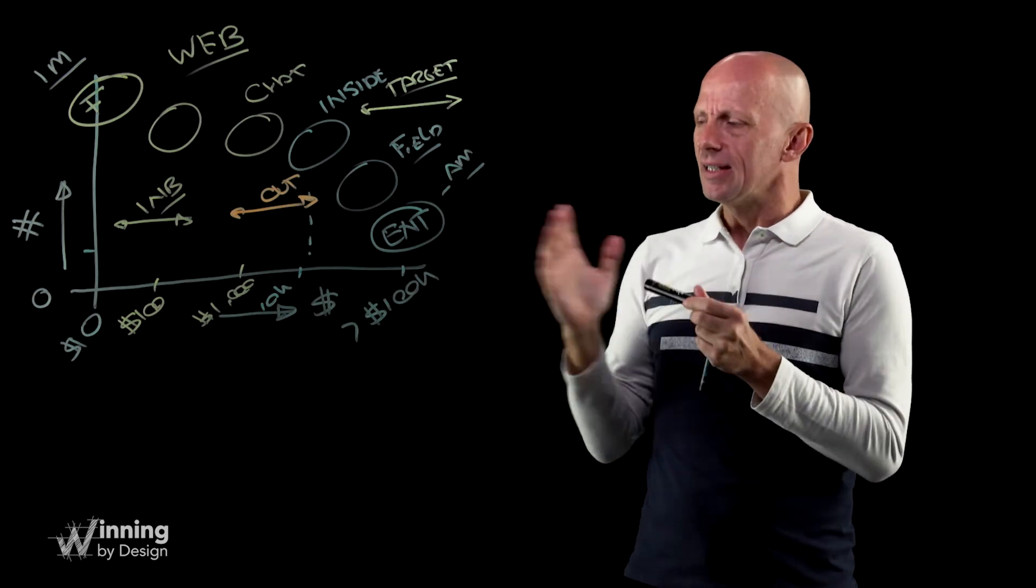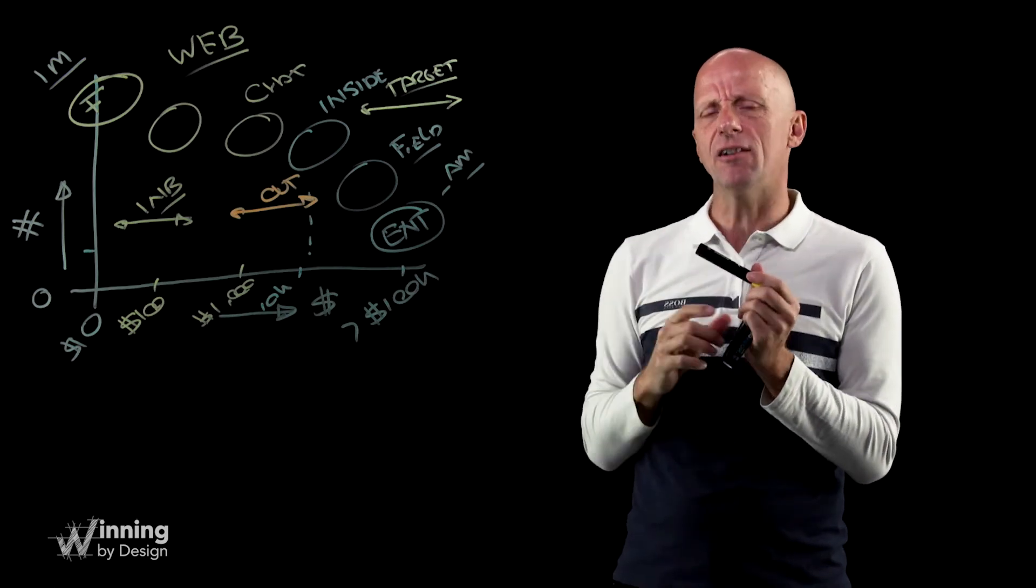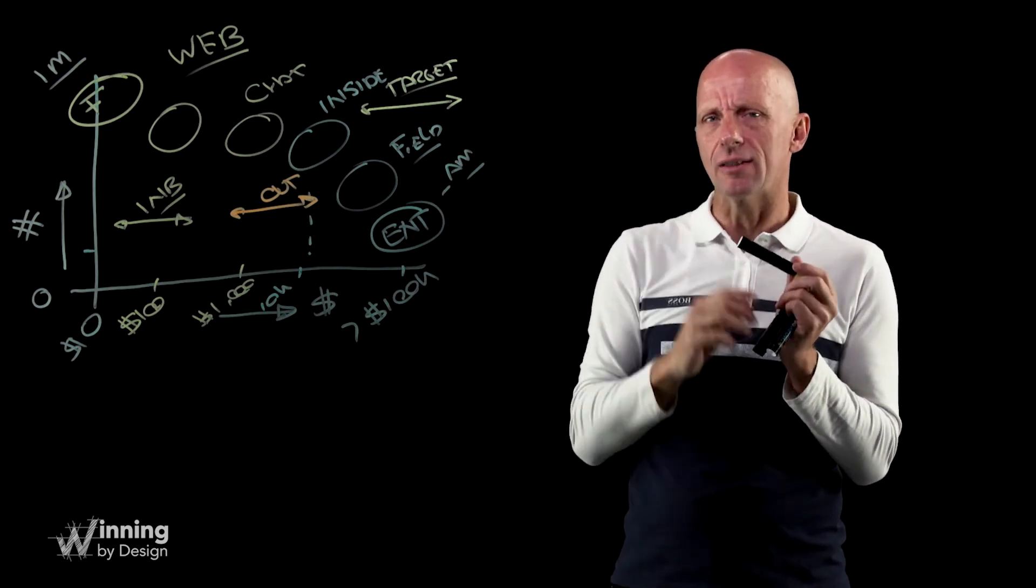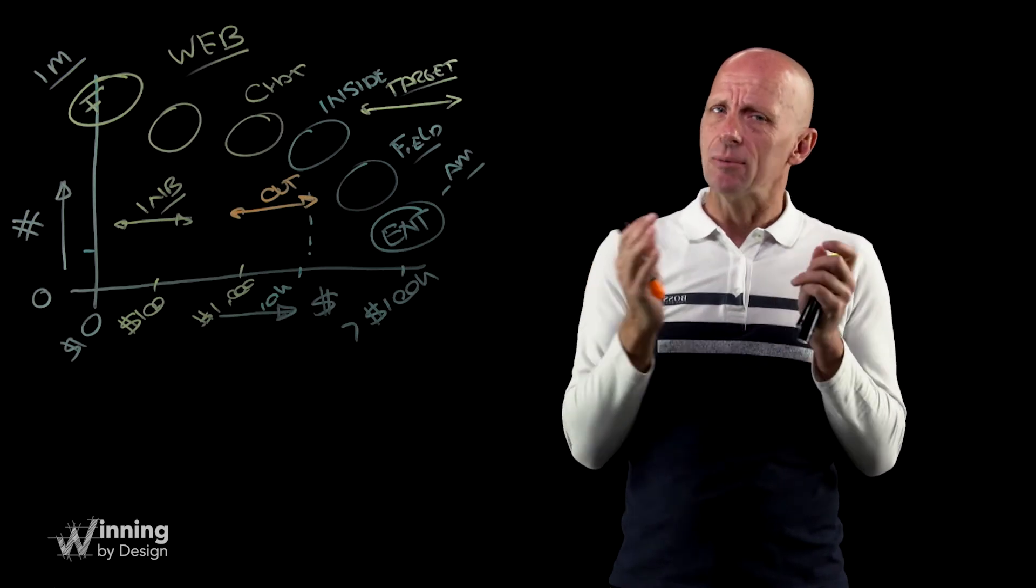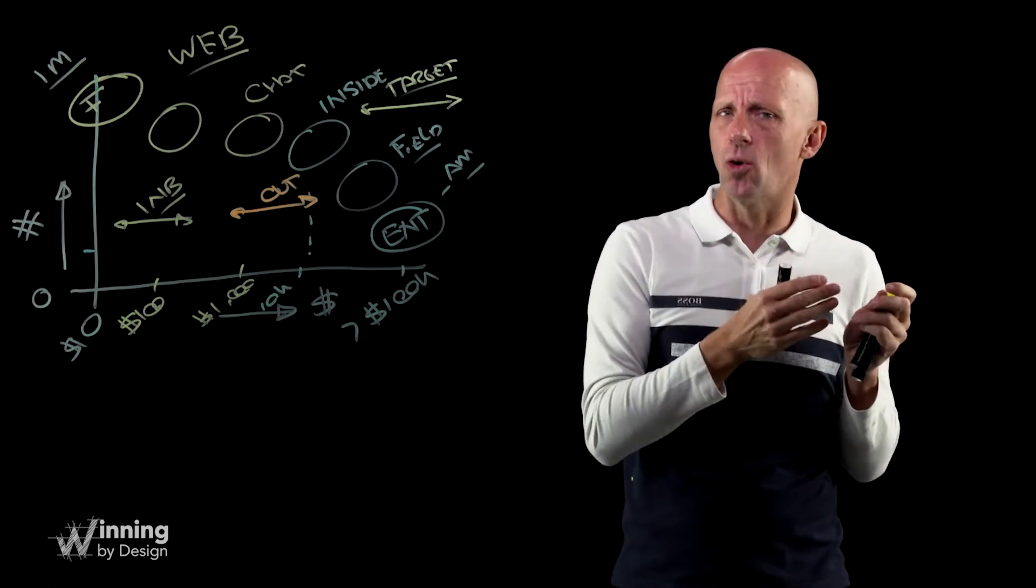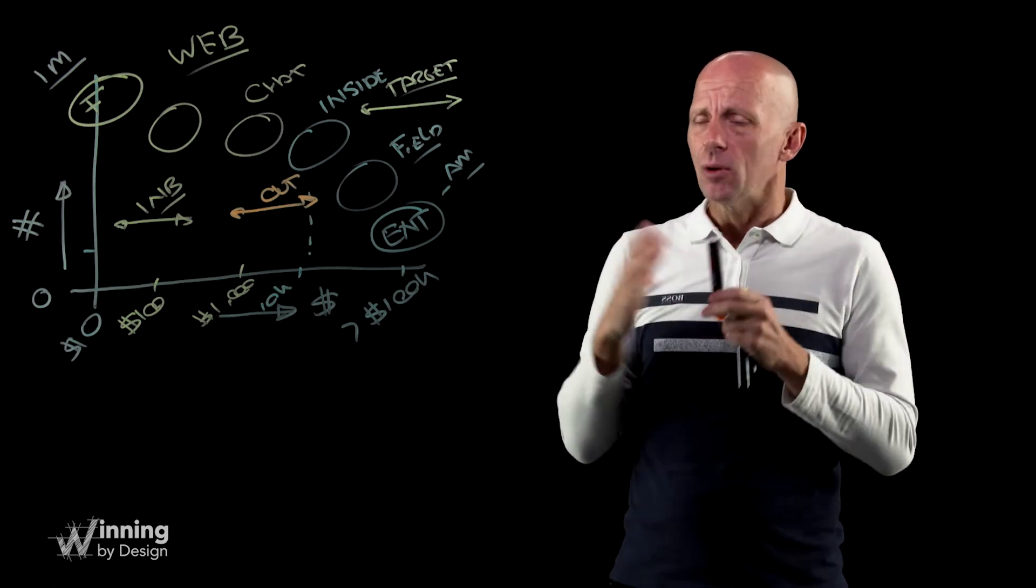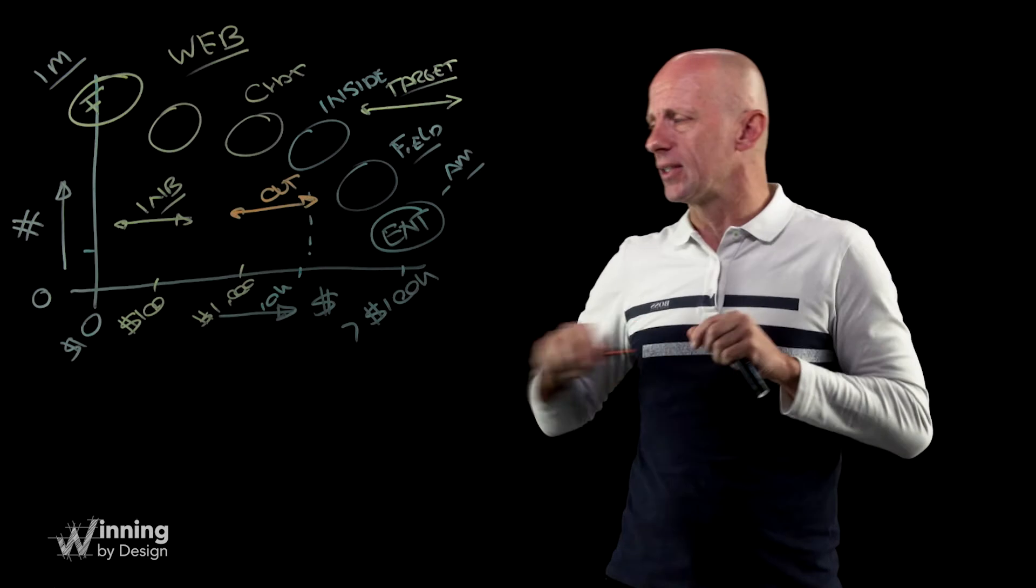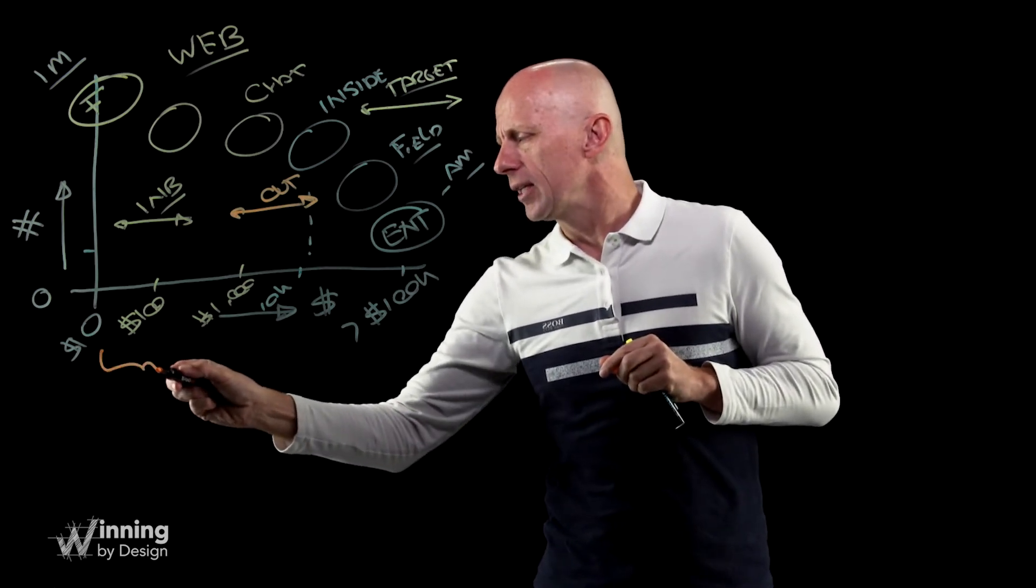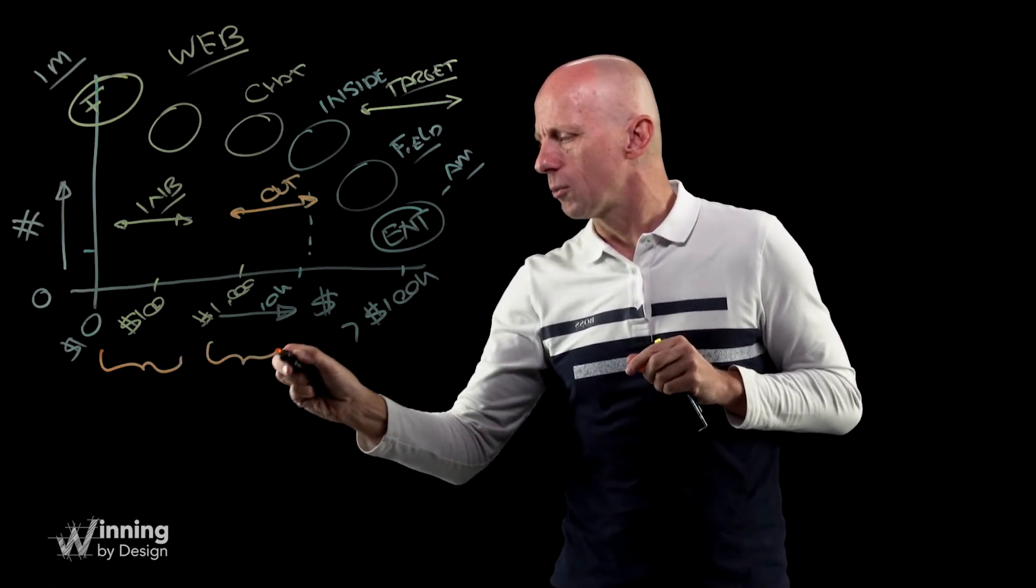And that starts to tell me that if I have three different kinds of businesses, three different kinds, I'm selling to SMB, I'm selling to mid-market, I'm selling to enterprise, or I'm selling to schools, I'm selling to districts, and I'm selling to regions, something like that. Whenever you start categorizing in these three, you probably have three different go-to-market strategies.